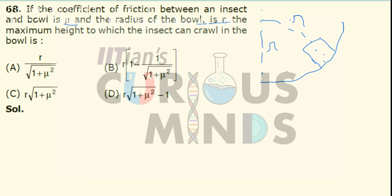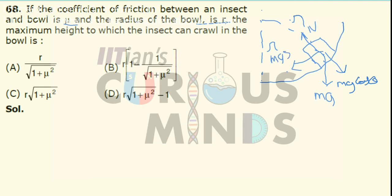Let us calculate the forces acting on this insect. Mg will be in the downward direction and the normal force will be in the perpendicular direction. The normal force will be equal to Mg cosθ and the component along the surface will be Mg sinθ. If the insect reaches a maximum height and tries to climb upwards, it will slip down due to the gravitational force component.